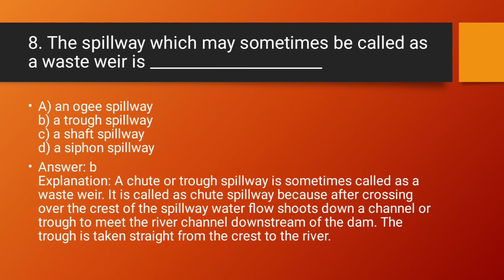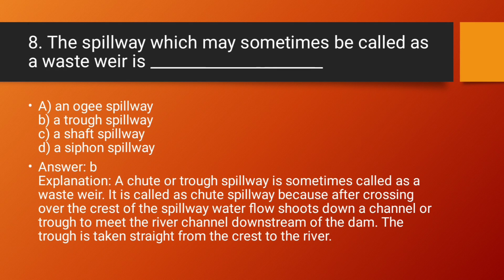Question number 8: The spillway which may sometimes be called a waste weir is — Option B: a trough spillway. Explanation: A chute or trough spillway is sometimes also called a waste weir. After crossing over the crest of the spillway, water flows chute down a channel or trough to meet the river channel downstream of the dam. The trough is taken straight from the crest to the river.